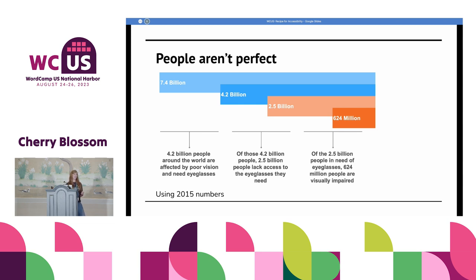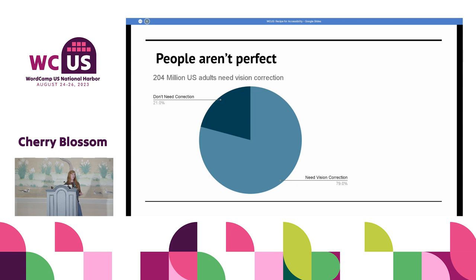That is a lot of people who can't read your website when they take their glasses off at night. In the US we have some more specific numbers from 2022: 79% of US adults need vision correction. Those are your customers, your clients, your users.